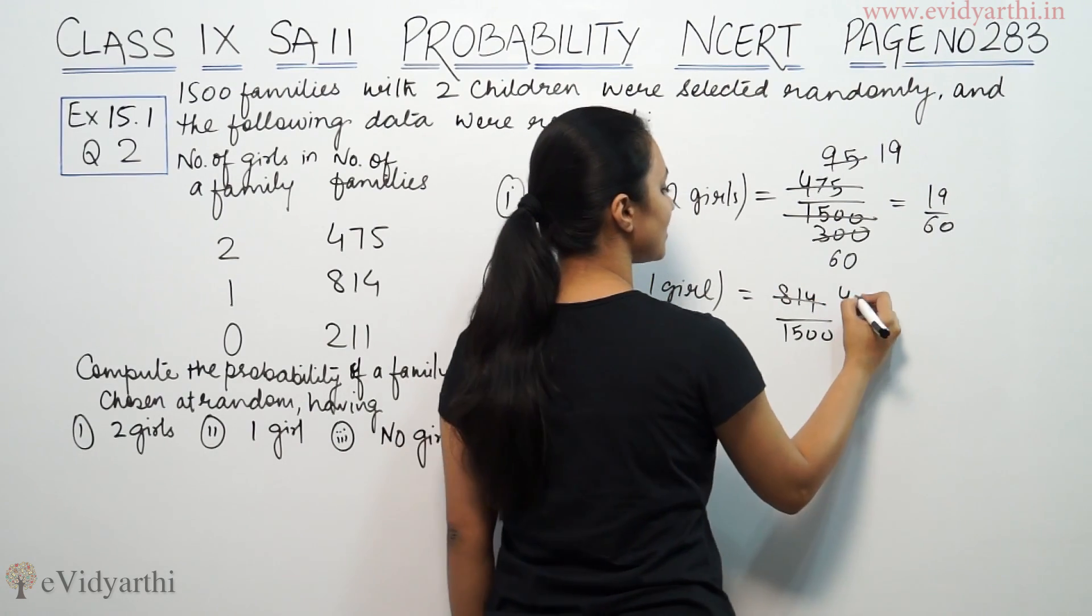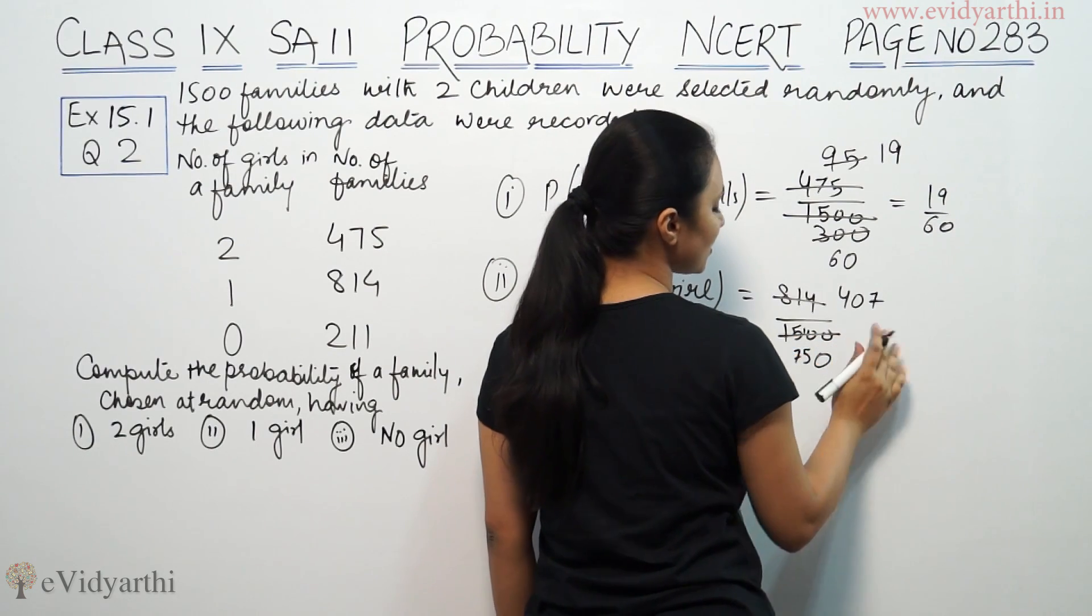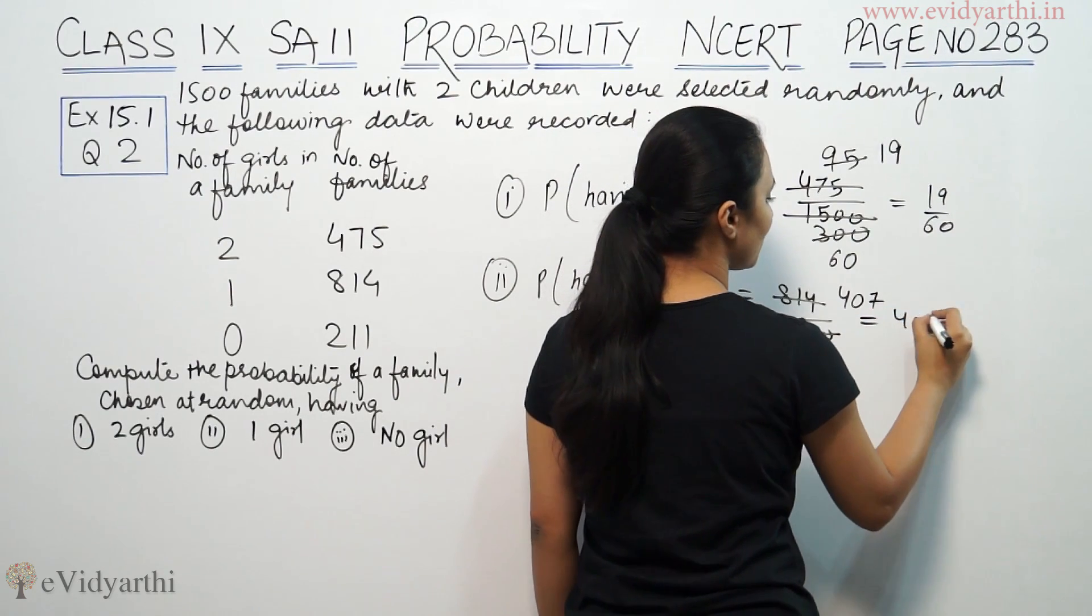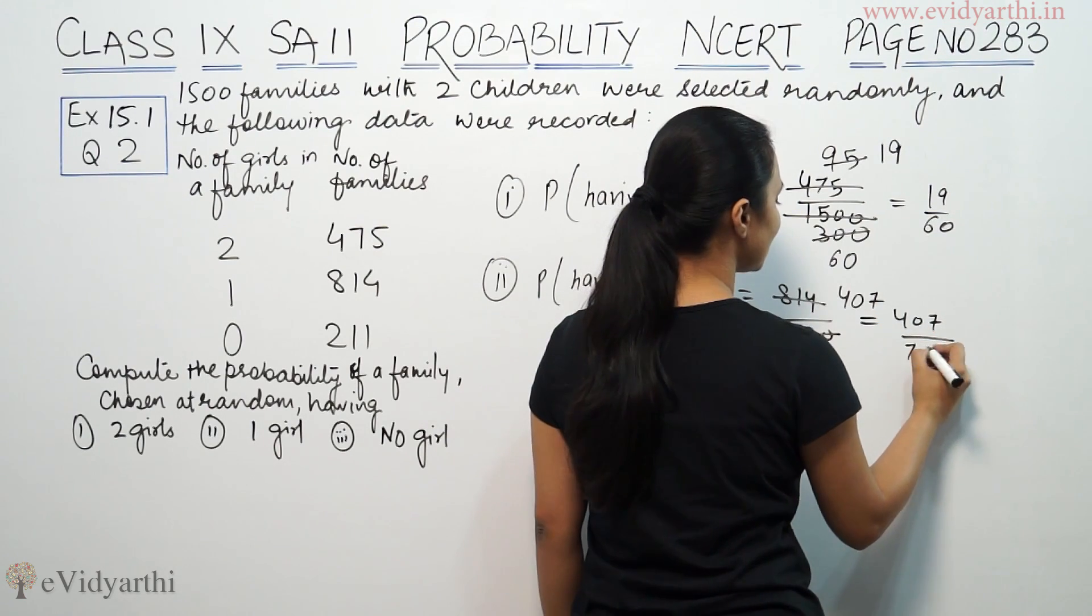2 divides 4 times, 0, 2 divides 7 times, 2 divides 7 times, 2 divides 5 times, 0. So this is 407, this is 10. This is 407 by 750.